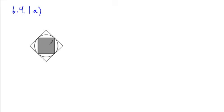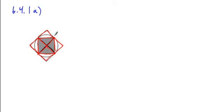When you look to see what portion of this figure is shaded, if we just drew in these two auxiliary lines here, you would see that you split this figure into 1, 2, 3, 4, 5, 6, 7, 8 equal triangles.